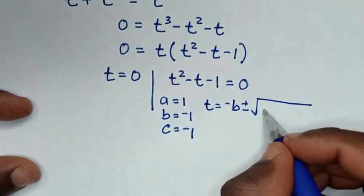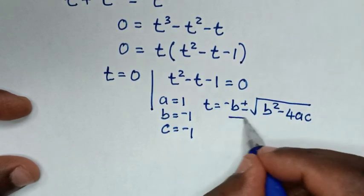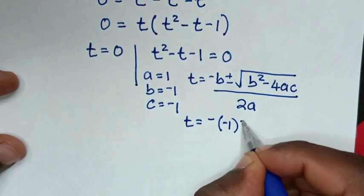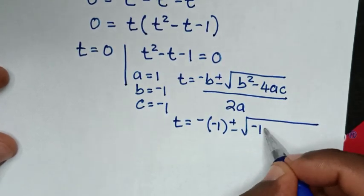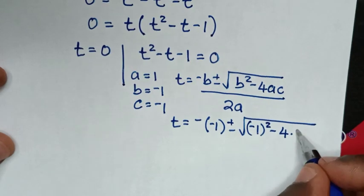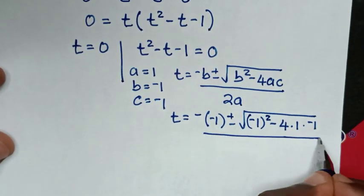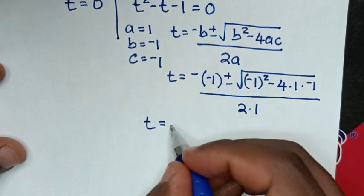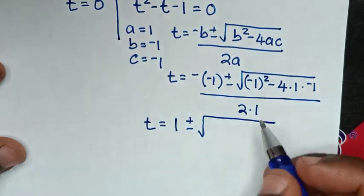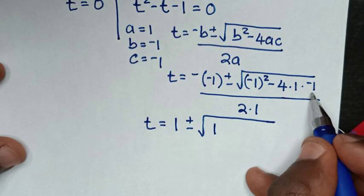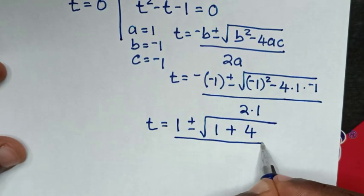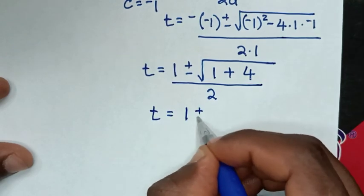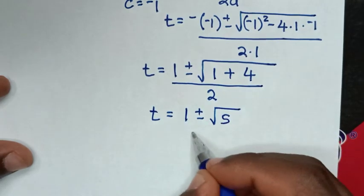From the quadratic formula, t equals negative b plus or minus square root of (b squared minus 4ac), all over 2a. Substituting: negative b is positive 1, b squared is negative 1 squared equals 1, and negative 4 times 1 times negative 1 is positive 4. So we get t equals 1 plus or minus square root of (1 plus 4), over 2 times 1, which gives t equals 1 plus or minus square root of 5, over 2.